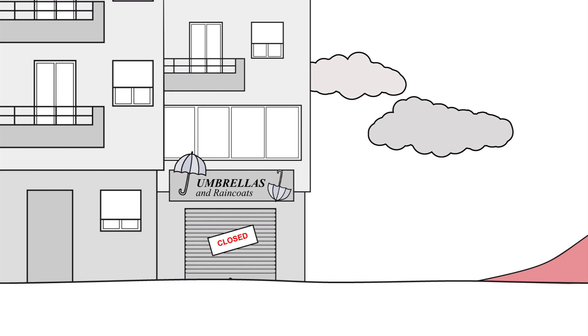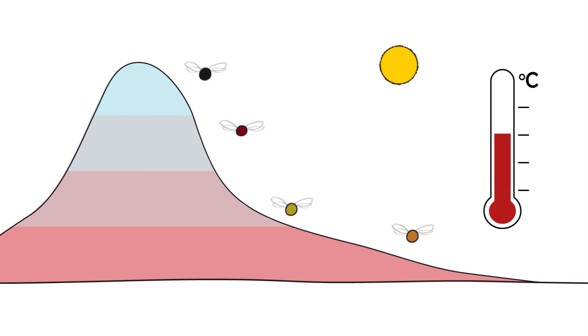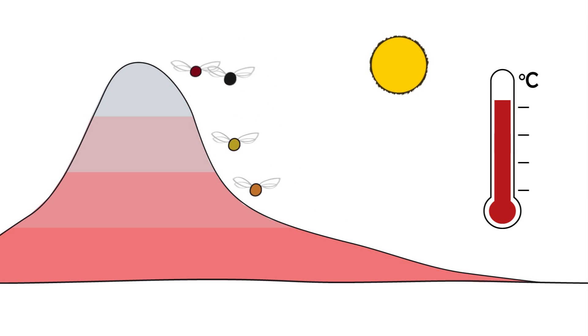Climate change also affects them. For example, when temperatures rise, some species are forced to find cooler places to live. If they don't find them, they simply die.